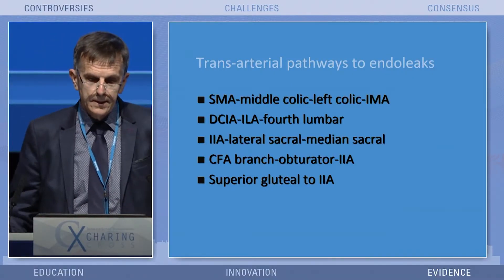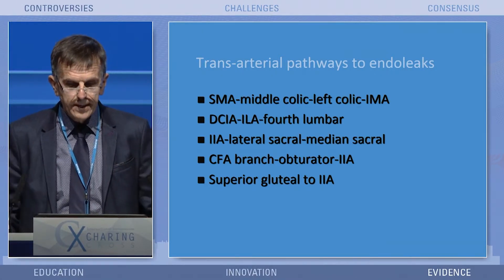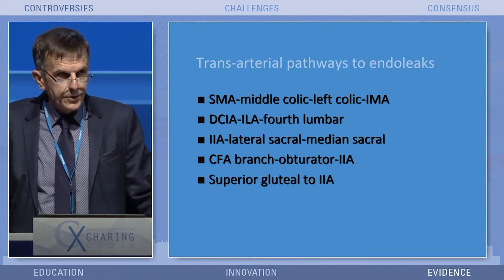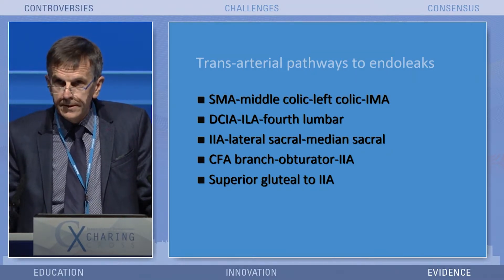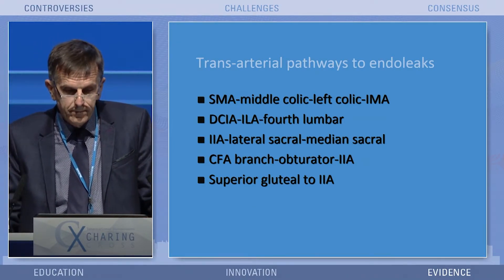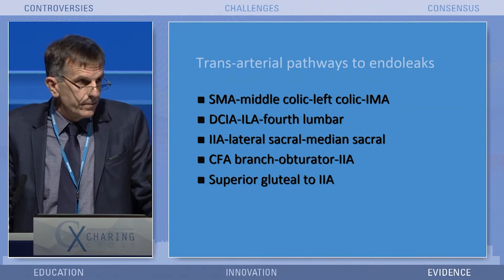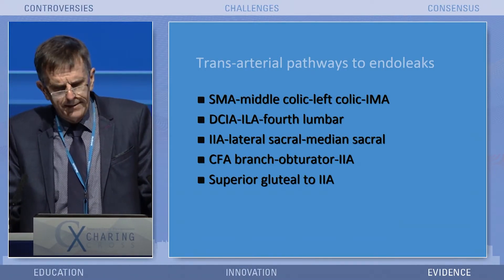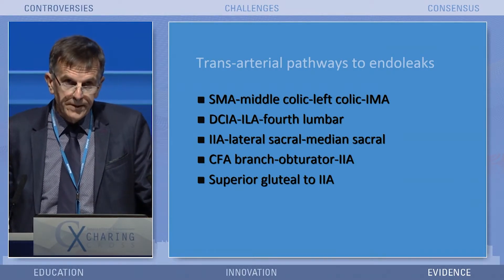The transarterial pathways to endoleaks are several. The two most common are the SMA through the arc of Riolan to IMA endoleaks, and the combination of deep circumflex iliac artery, ilio-lumbar artery, and fourth lumbar artery that gives us an avenue from the groin to get to the aorta for lumbar endoleaks. Two less common ones are the internal approach from the lateral to the median sacral to get to aortic endoleaks, the common femoral obturator to internal iliacs, and the superior gluteal.